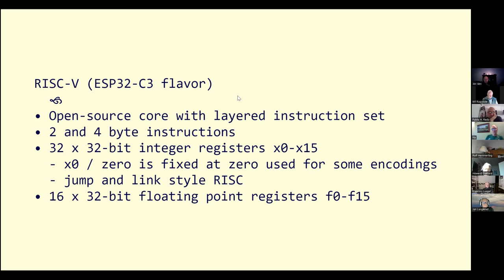The RISC-V is an open source core, and the version in the ESP32-C3 supports two and four byte instructions. It's more of a conventional RISC CPU that uses a jump-and-link style. X0 is not really a real register but is used for some of the encodings and also as a zero value, and then there is floating point support as well.